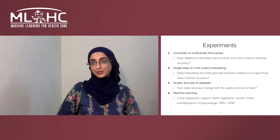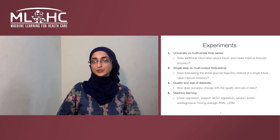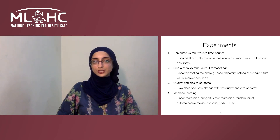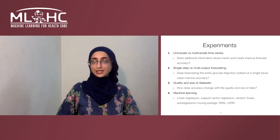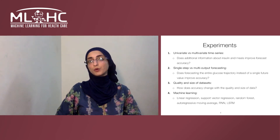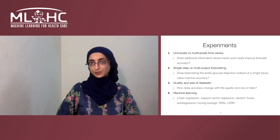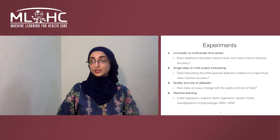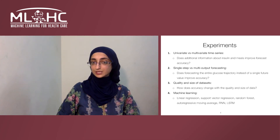We tried to answer five main questions with the help of our experiments. The first was a comparison between univariate and multivariate settings — we wanted to investigate the effect of adding additional information like meals and insulin and see how it affects forecast accuracy. The second was comparing single-step and multi-output forecasting for deep learning models. A single-step model predicts only a single value in the prediction horizon, whereas a multi-output forecasting model can estimate all the values in the prediction horizon.